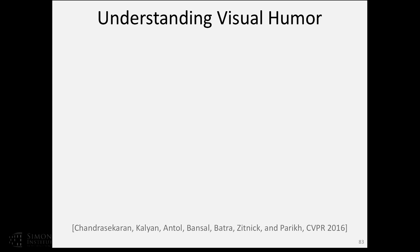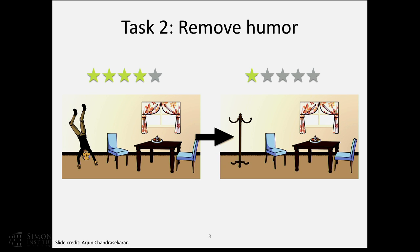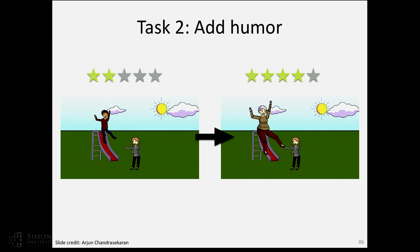One last thing: with this common sense reasoning, a nice space in which to test whether a system has common sense is humor. We wanted to see if we can get a machine to learn about visual humor through these abstract scenes. The tasks we looked at: given a scene, rate on a scale of one to five how funny it is; or give the machine a funny scene and ask it to modify it as little as necessary so the scene stops being funny; or start from a boring scene and get the machine to make it funnier.